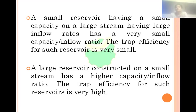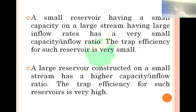A small reservoir having a small capacity on a large stream having large inflows has a very small capacity inflow ratio, meaning very small trap efficiency. A small reservoir on a large river — the river is very big but the reservoir is small — in that condition, the trap efficiency is small. Conversely, a big reservoir on a small river will have higher trap efficiency.